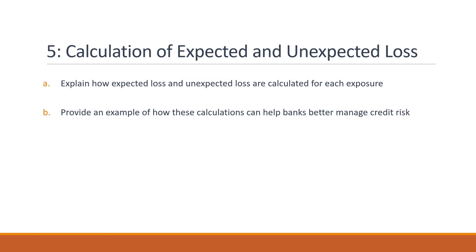If the RWA is high, it means the portfolio has a higher risk and the bank needs to hold more capital to mitigate potential losses. Conversely, if the RWA is low, it means the portfolio has a lower risk and the bank needs to hold less capital. This calculation helps the bank better manage its credit risk by ensuring that it holds an appropriate level of capital to absorb potential losses. It also allows the bank to make informed decisions about its lending practices and adjust its portfolio to manage risk more effectively.